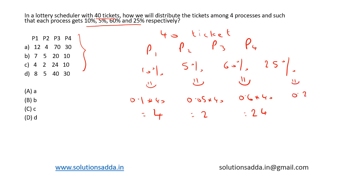P4 would be 0.25 times 40, which will be equal to 10. So based on the options, we have option c: 4, 2, 24, and 10. So option c is the right answer here.